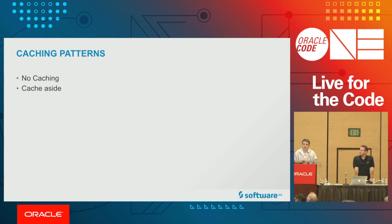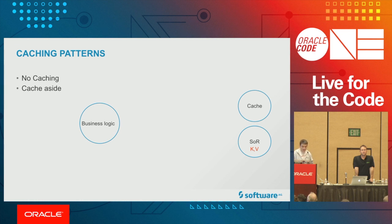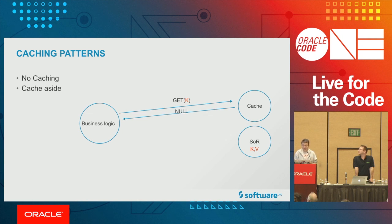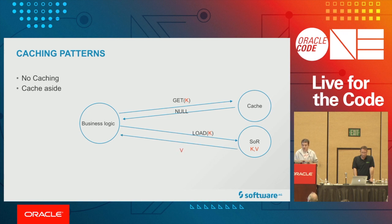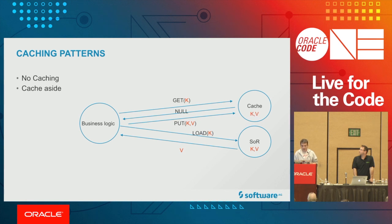Cache-aside is the most common caching pattern. Your business service first asks the cache for a key — the cache says no on the first call, so your business logic then asks the system of records, which could be a database, web service, or a long computation. Once you get the value, before using it you put it in cache so that subsequent calls will hit the cache directly and you won't pay the price of going back to the system of record for that key.